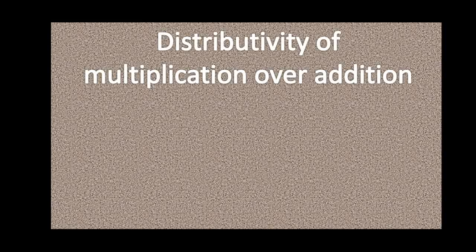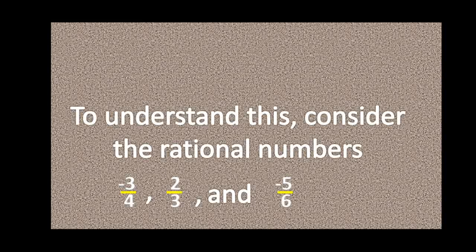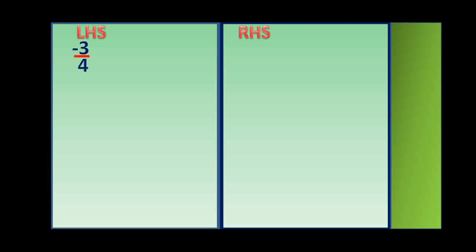Distributivity of multiplication over addition. To understand this, consider the rational numbers minus 3 by 4, 2 by 3 and minus 5 by 6. Let us solve the left hand side and right hand side. First, let us arrange the numbers on the left hand side: minus 3 by 4 into (2 by 3 plus minus 5 by 6). Here you can see the denominators are 3 and 6.